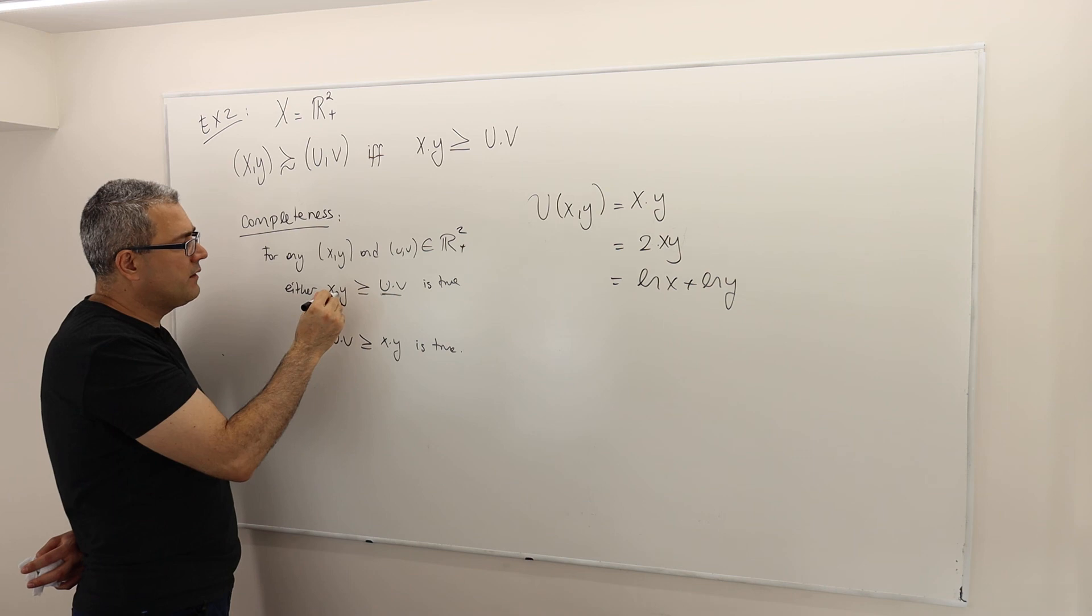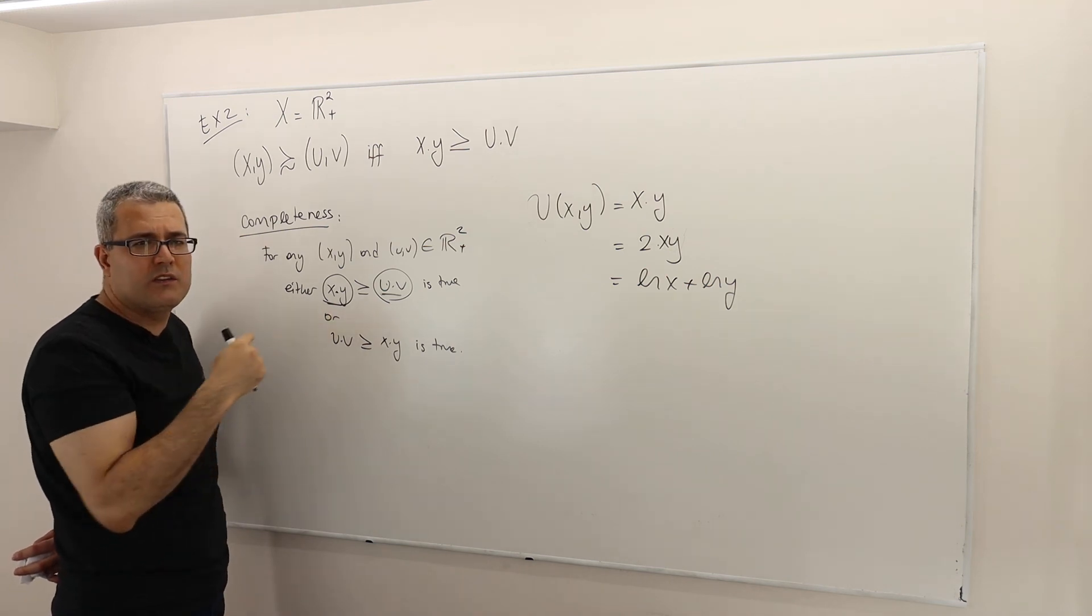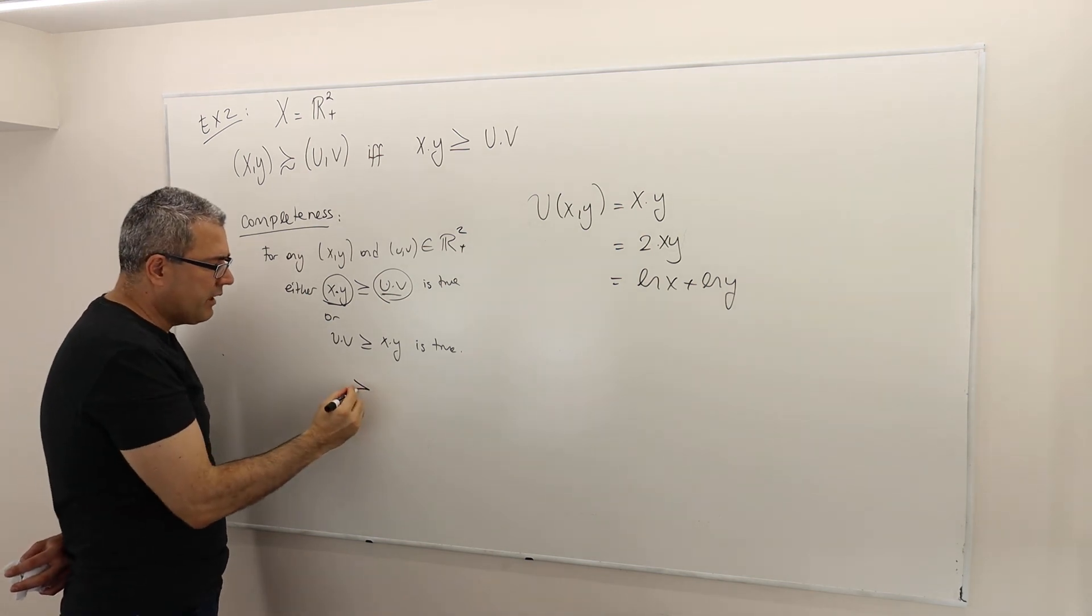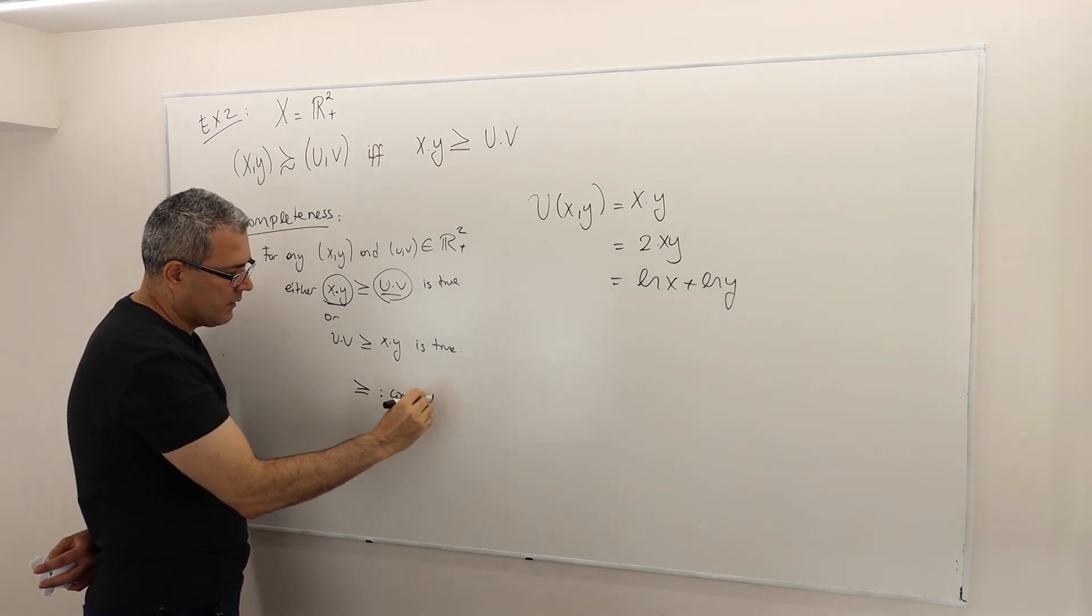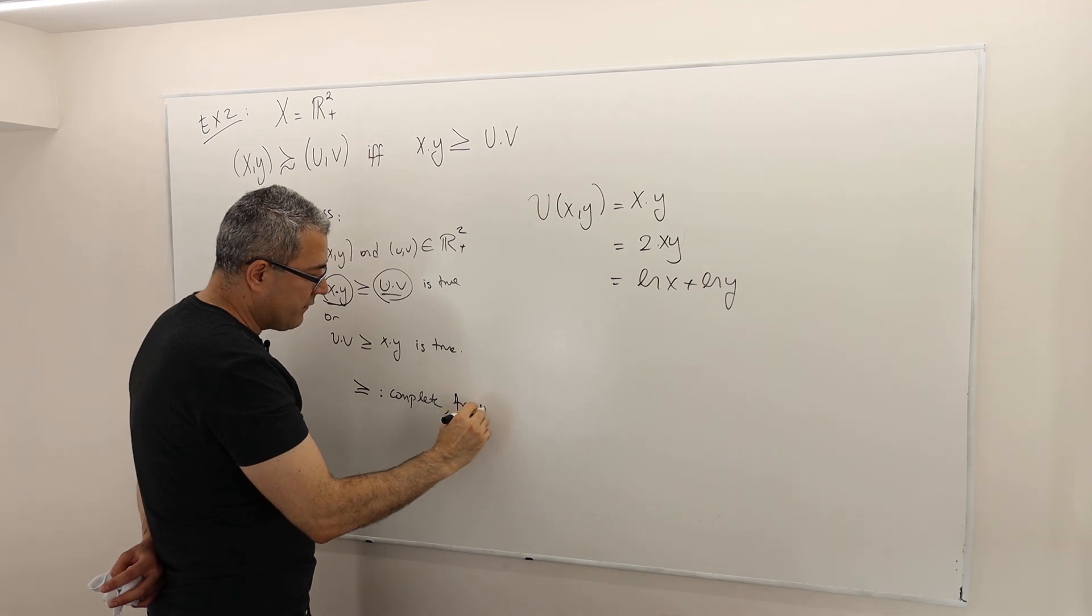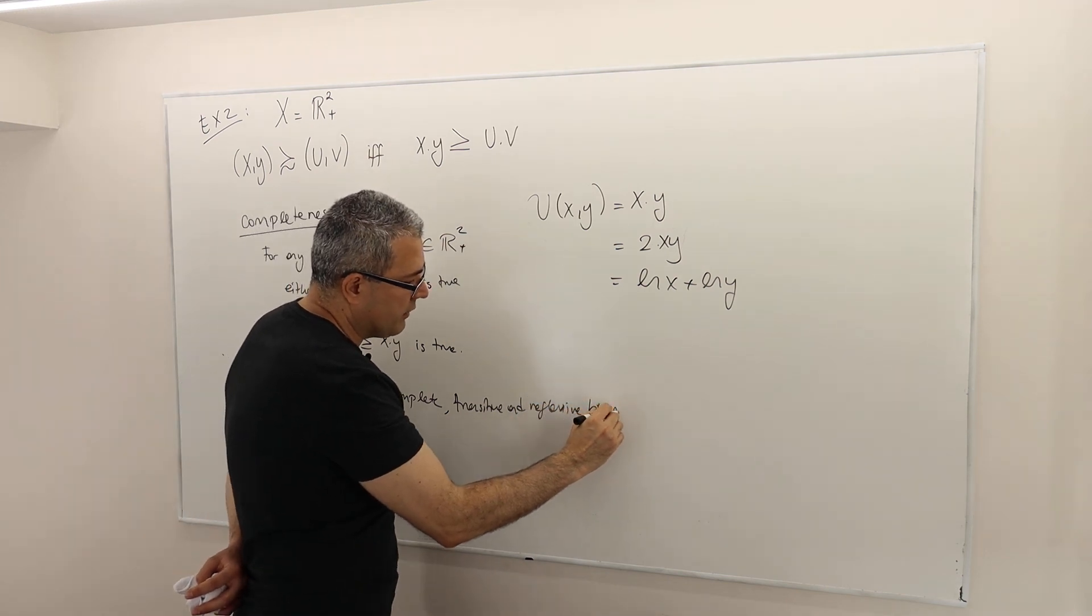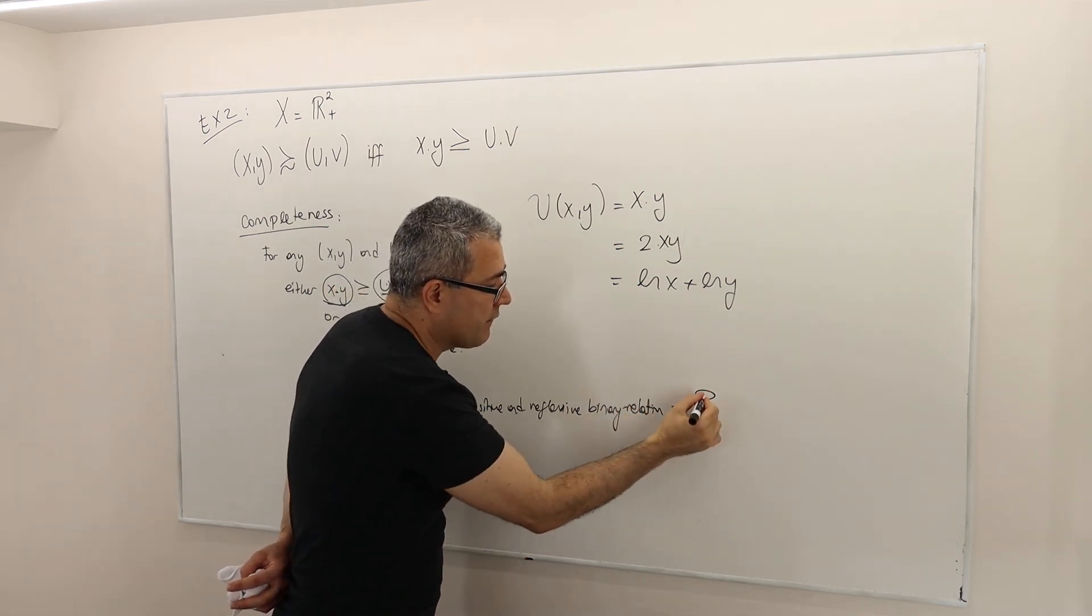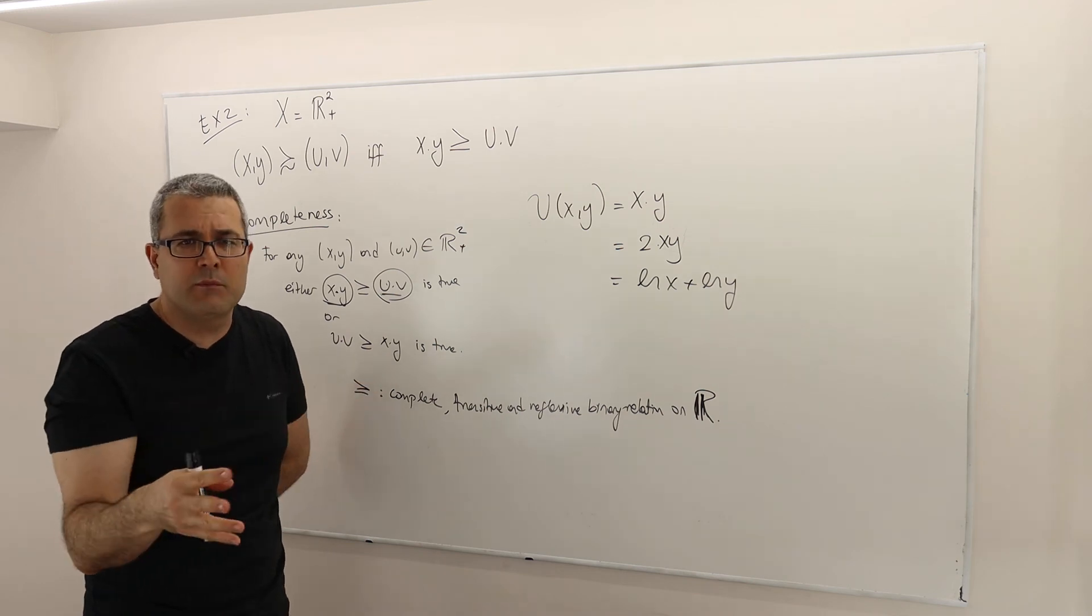Mainly because when I multiply two real numbers, what I'm going to get at the end is a real number. x times y is a real number, like 3, 5, 7.2, some real number. And we know that greater than or equal to is a complete, maybe that's the essence of everything, it's a complete, transitive, and reflexive binary relation on R, set of reals, not vectors. I don't put plus or minus because it's true for all minuses and positives.